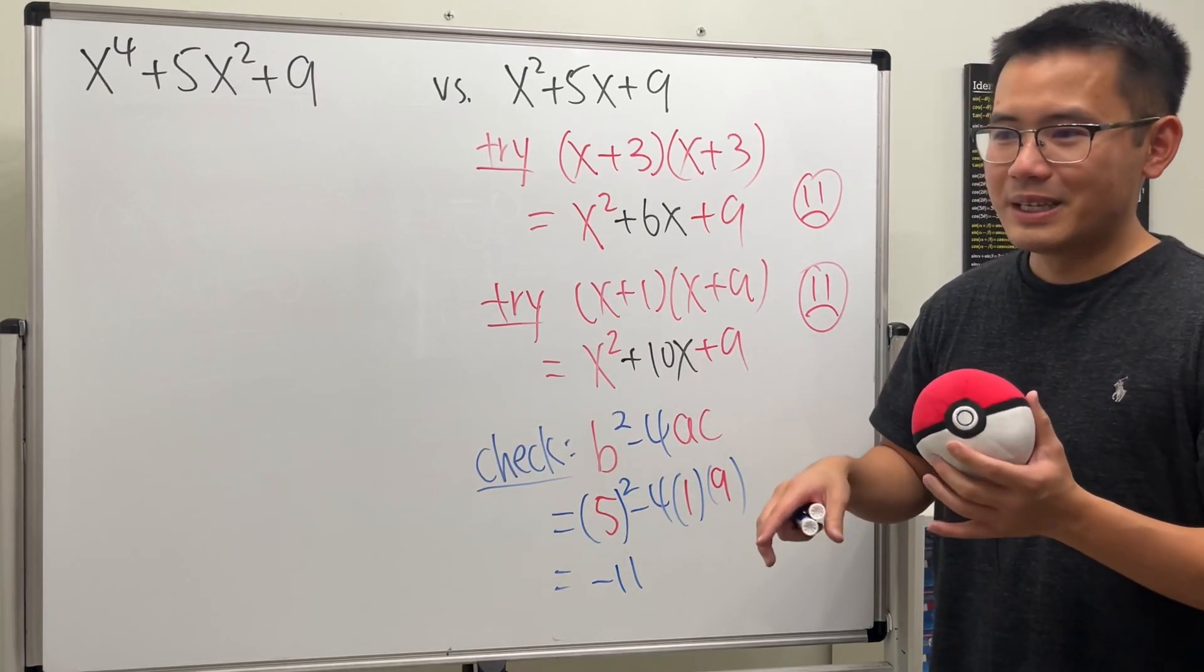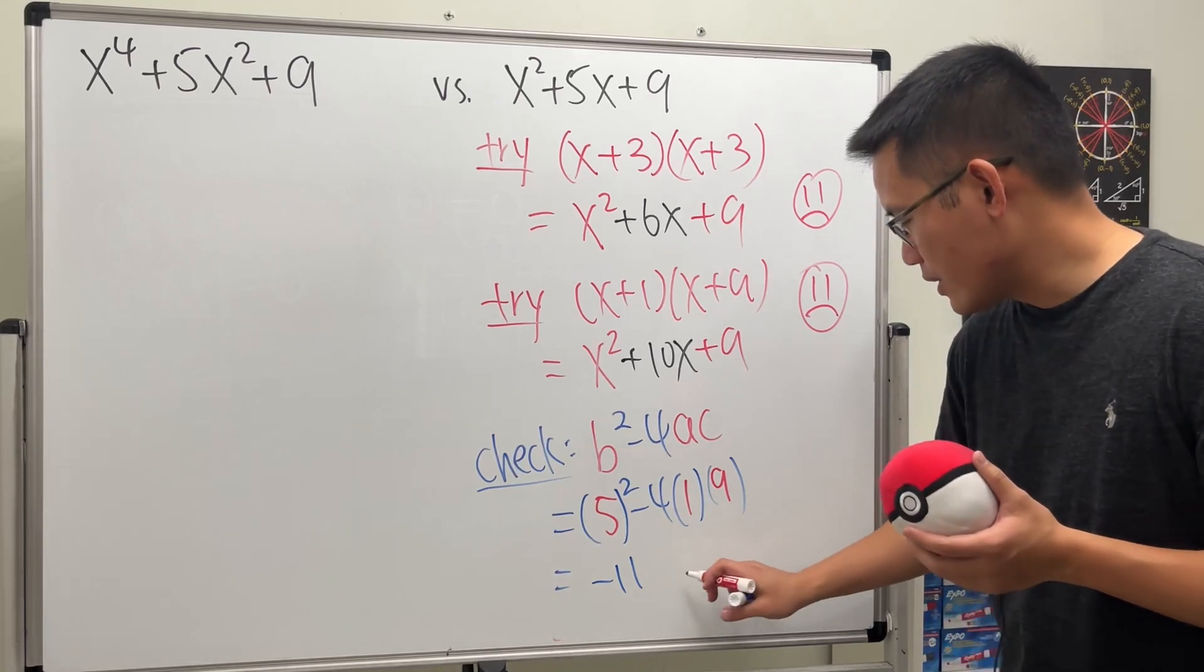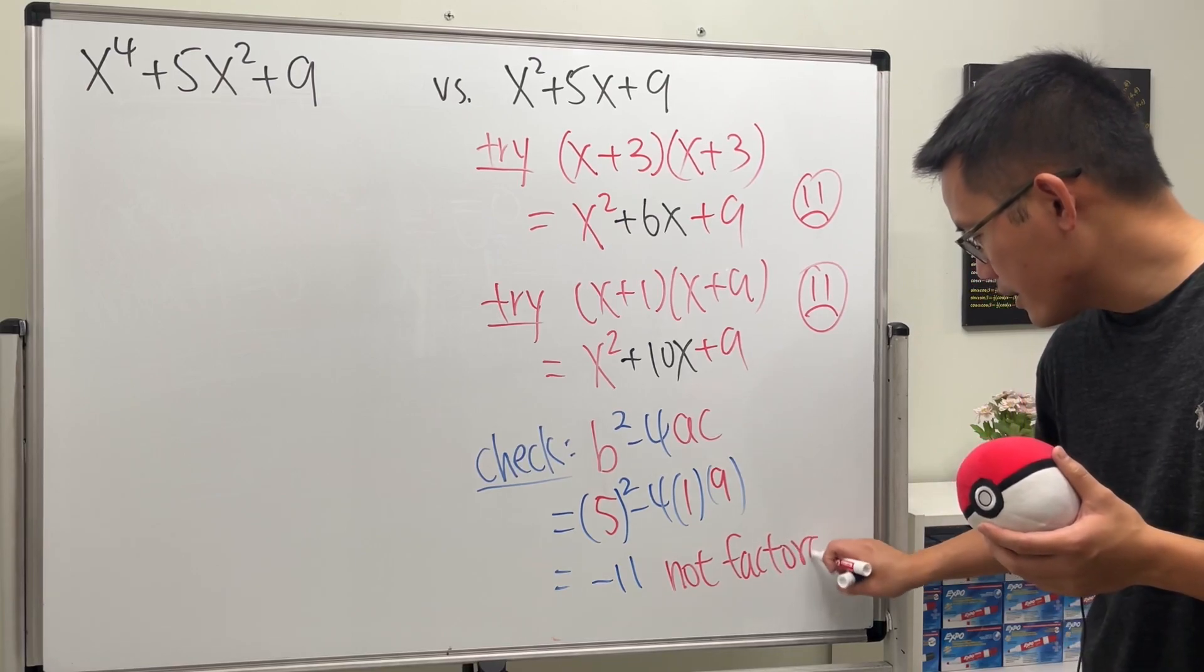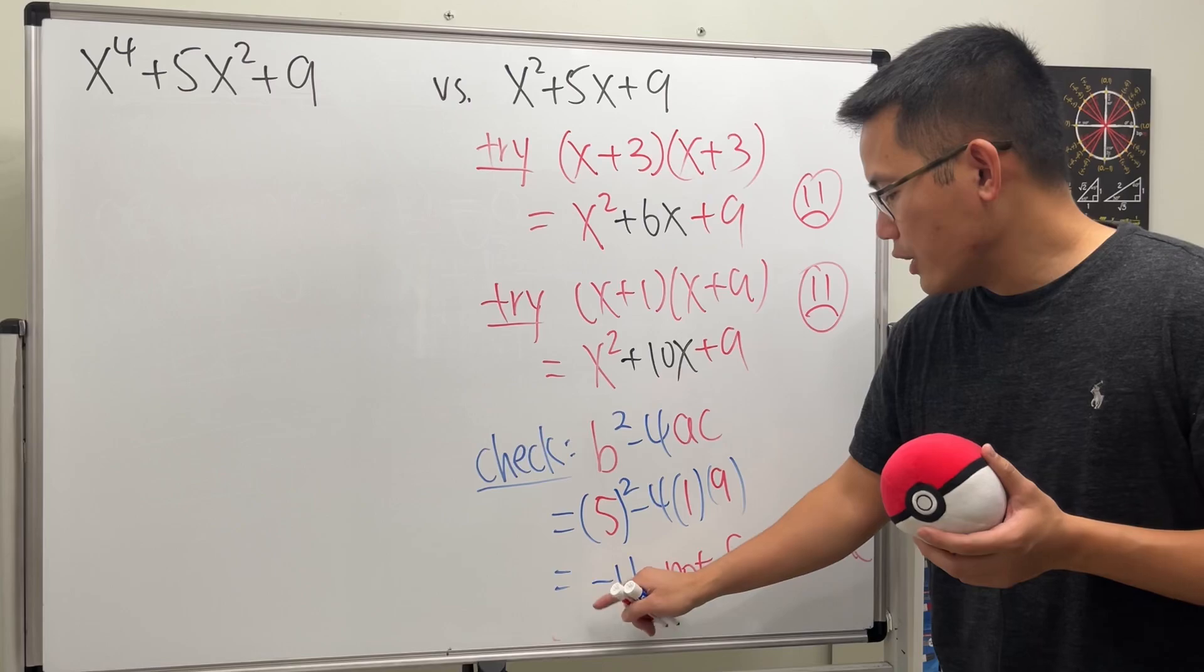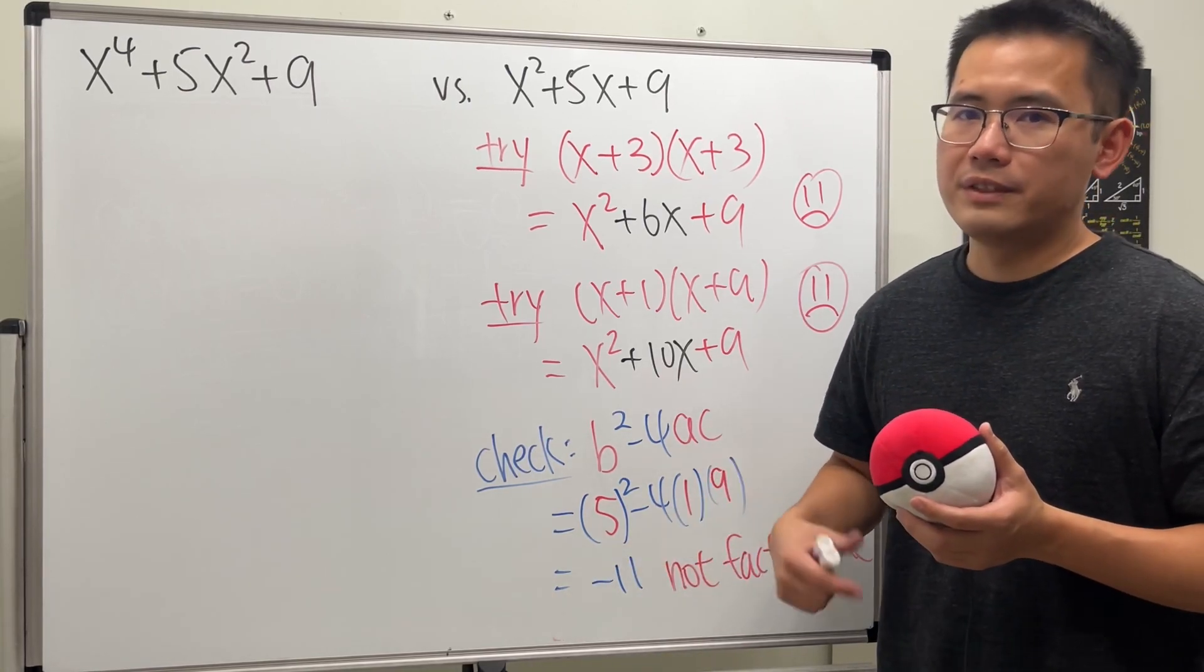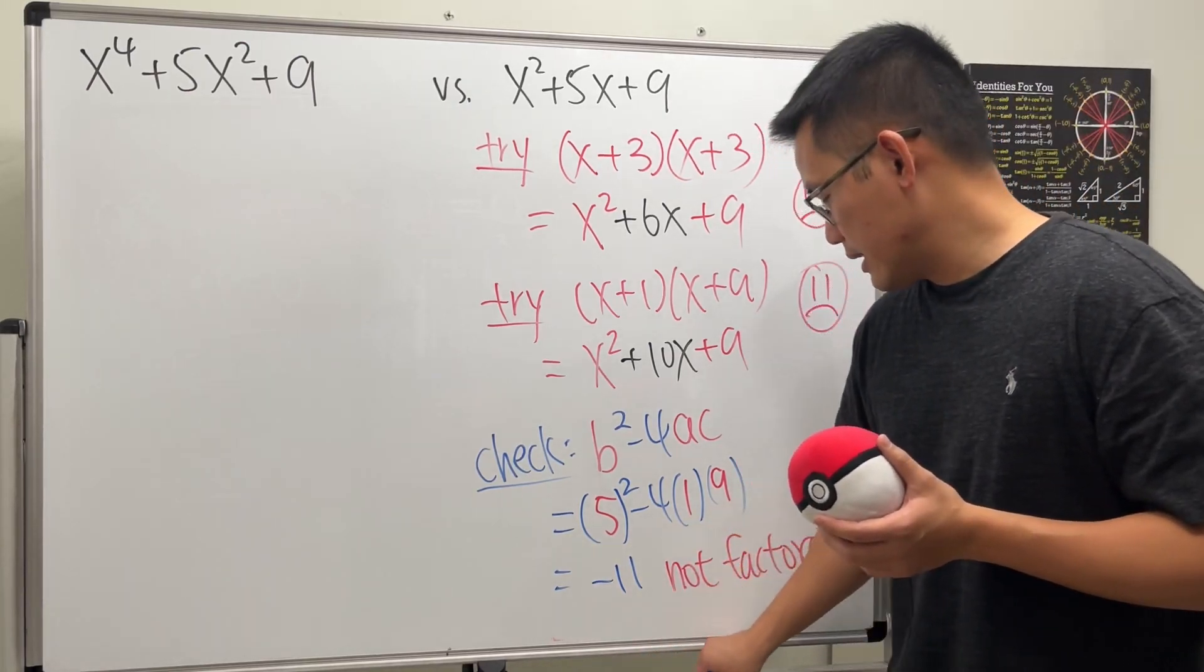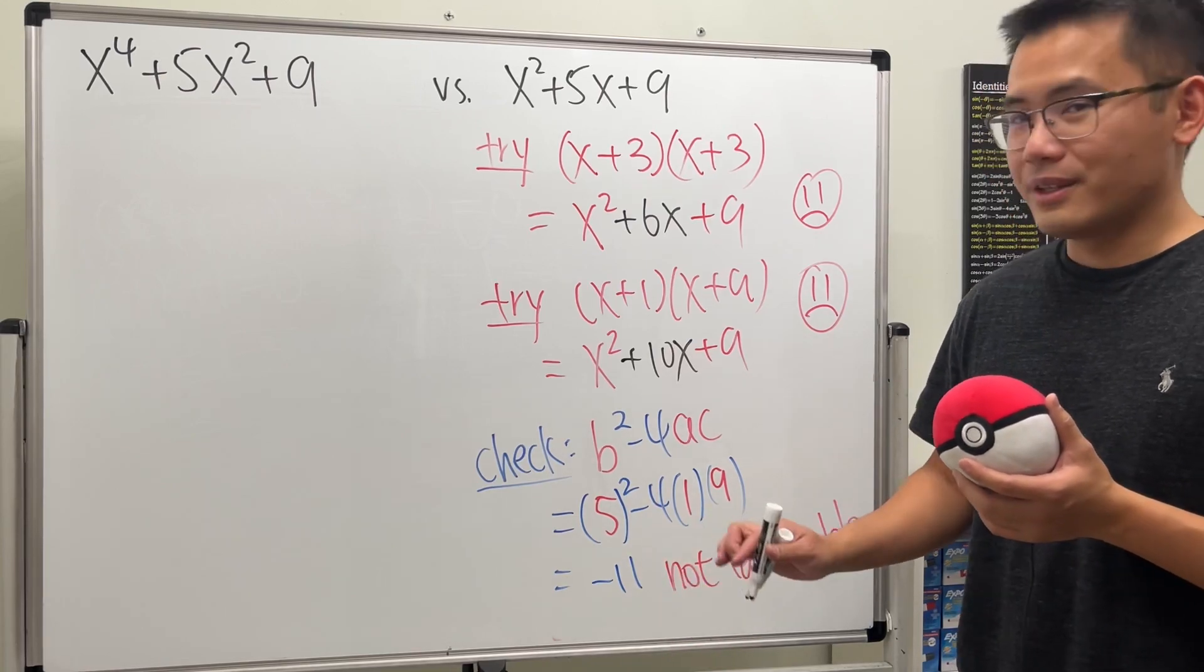And now this is not positive, that's why this right here cannot be factored with real numbers. This right here is not a perfect square, so there's no way for us to factor it with nice combinations. So that's the idea. This tells us that not factorable.